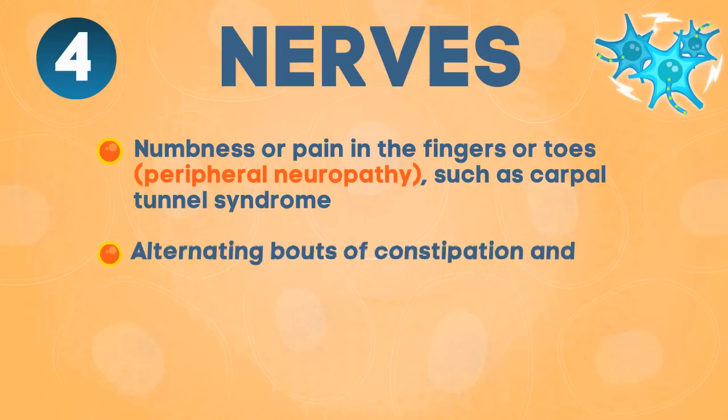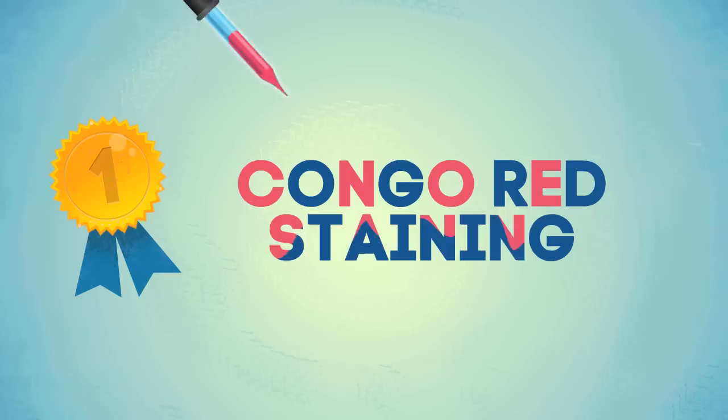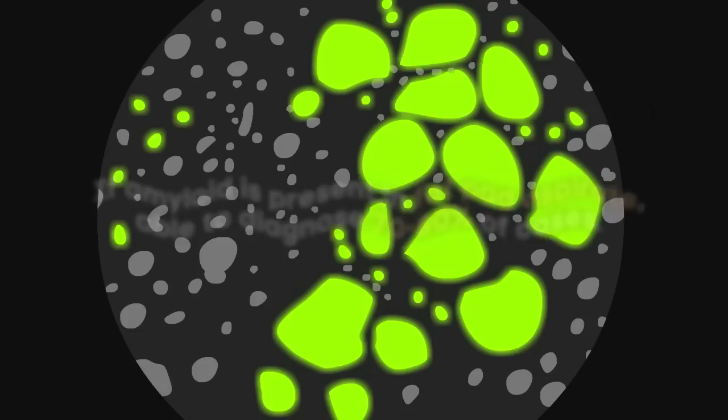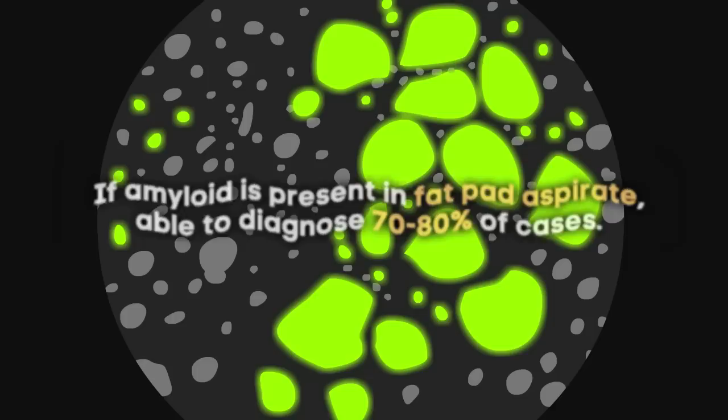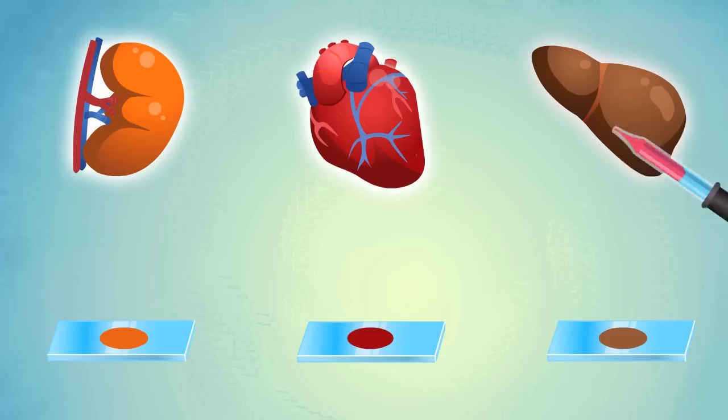The gold standard for detecting amyloid deposits is to employ Congo red staining on a tissue sample. The easiest way to get a sample is to aspirate fat from the abdomen, like a mini liposuction. Amyloid has a pink color when dyed with Congo red and a characteristic apple green birefringence when viewed with a polarizing microscope. This signature technique is able to diagnose amyloidosis in 70-80% of cases. If the fat pad aspirate is negative for amyloidosis, but suspicion of the disease is high, a direct biopsy of the involved organ, for example the heart, kidney or liver, should be done.